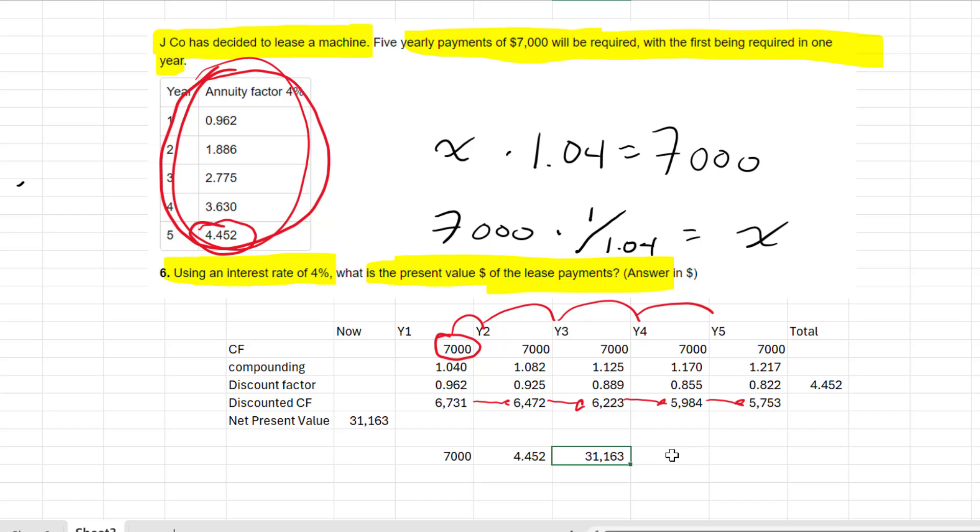Ladies and gentlemen, there you have it, a deep dive into discount rates, present value, and net present value. We're using the concept of time value of money to understand what is the value in today's terms of these five future $7,000 payments. Ladies and gentlemen, that's a wrap on our video looking at time value of money type ACCA questions.